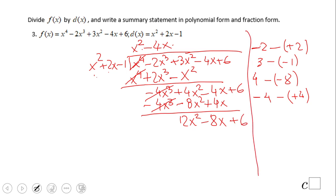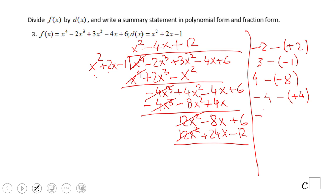We need to multiply by 12. 12 times x squared is 12x squared. 12 times 2x is 24x. 12 times negative 1 is negative 12. These two cancel out, then we have negative 8 minus positive 24, that will be negative 32x. And then positive 6 minus negative 12, that is positive 18.